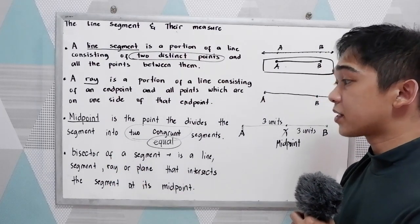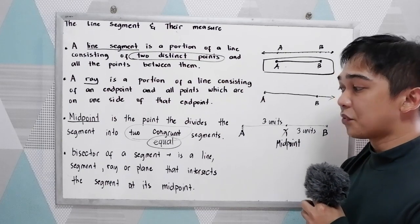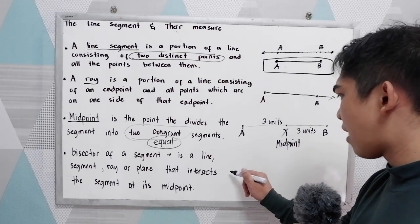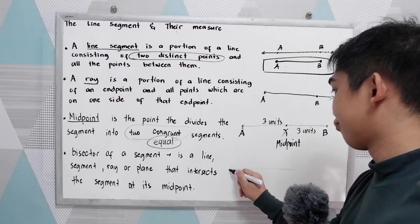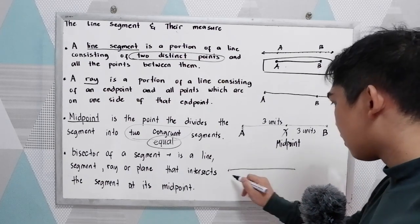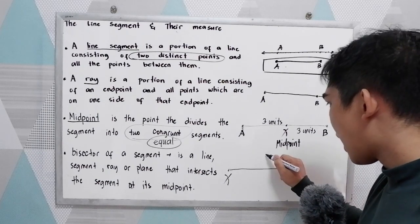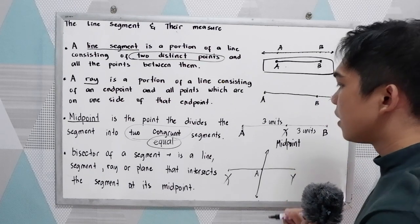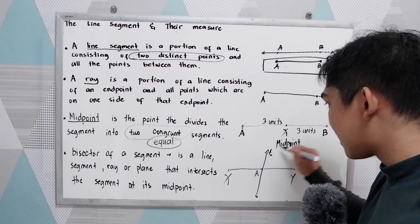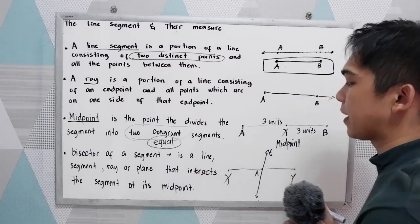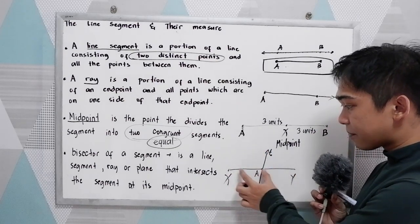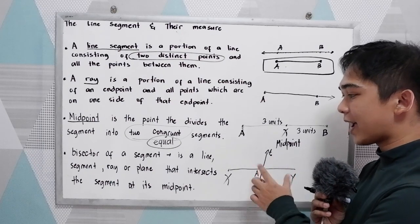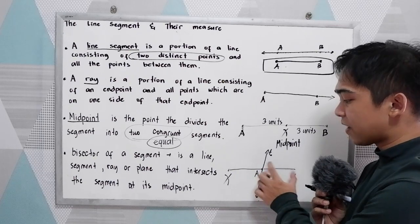Next, the bisector of a segment, or segment bisector. It is a line, segment, ray, or plane that intersects the segment at its midpoint. So let's say we have a line segment XY and we have a line that intersects that segment — let's say line T. Therefore line T is a bisector of the segment. That means it divides the segment into two equal parts, because the bisector intersects at the midpoint, and the midpoint divides the segment into two equal parts.